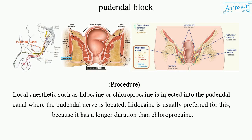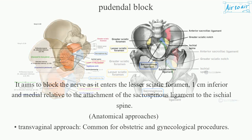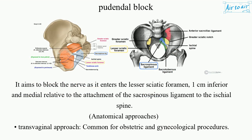Local anesthetic such as lidocaine or chloroprocaine is injected into the pudendal canal, where the pudendal nerve is located. Lidocaine is usually preferred because it has a longer duration than chloroprocaine. The aim is to block the nerve as it enters the lesser sciatic foramen, one centimeter inferior and medial relative to the attachment of the sacrospinous ligament to the ischial spine.